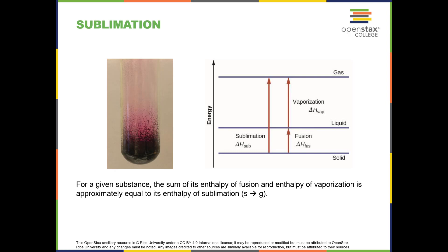Another type of enthalpy is the enthalpy of sublimation, where a substance goes directly from solid to gas. Iodine and dry ice are common examples. The enthalpy of sublimation is roughly equal to the sum of the enthalpy of fusion and the enthalpy of vaporization, which makes sense because sublimation skips the liquid phase — it's just combining both steps.